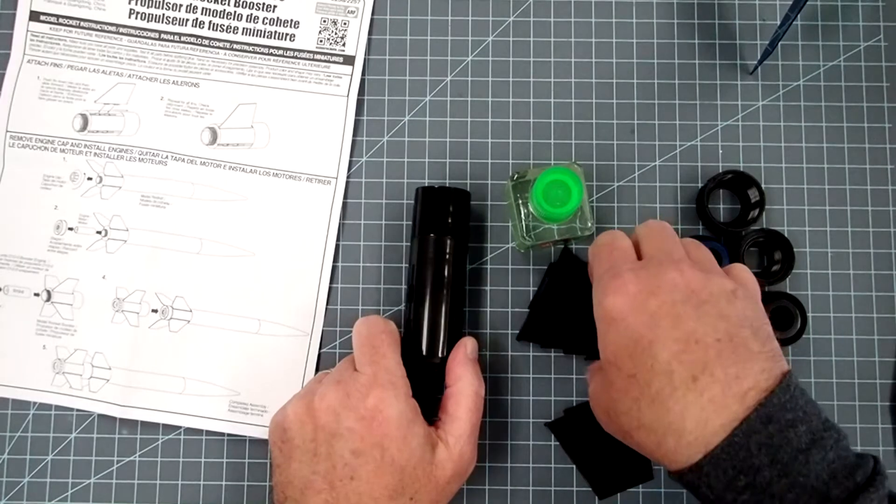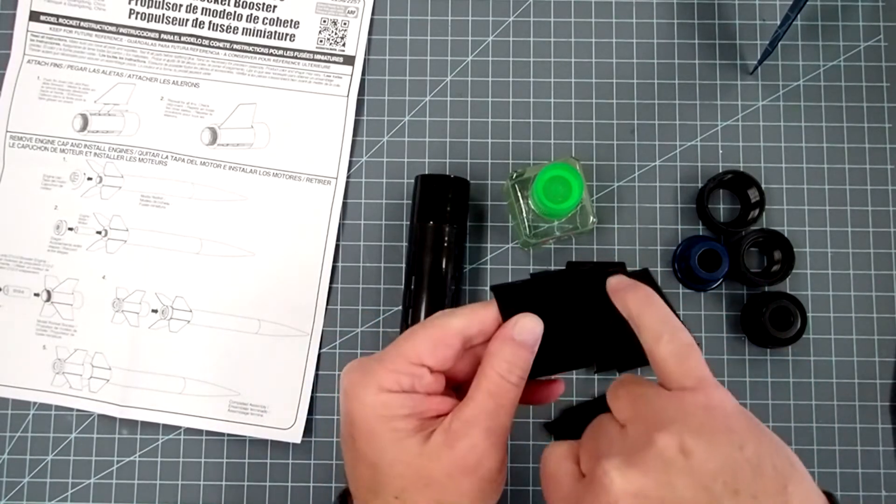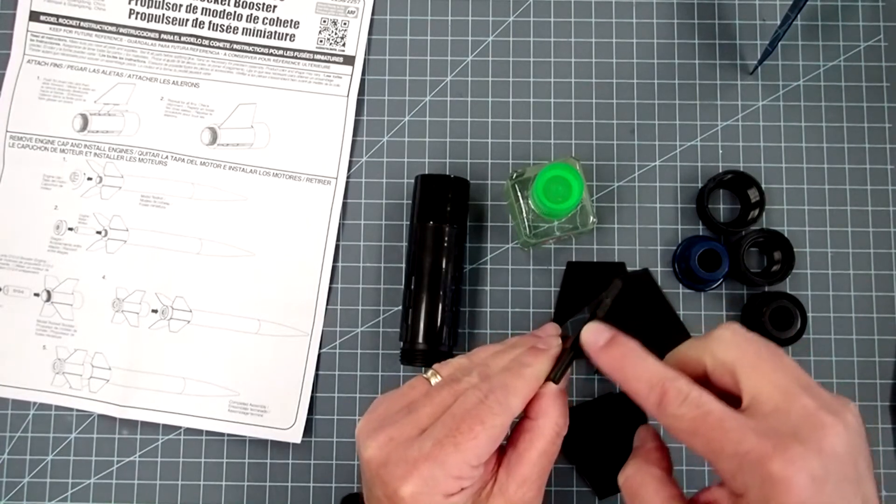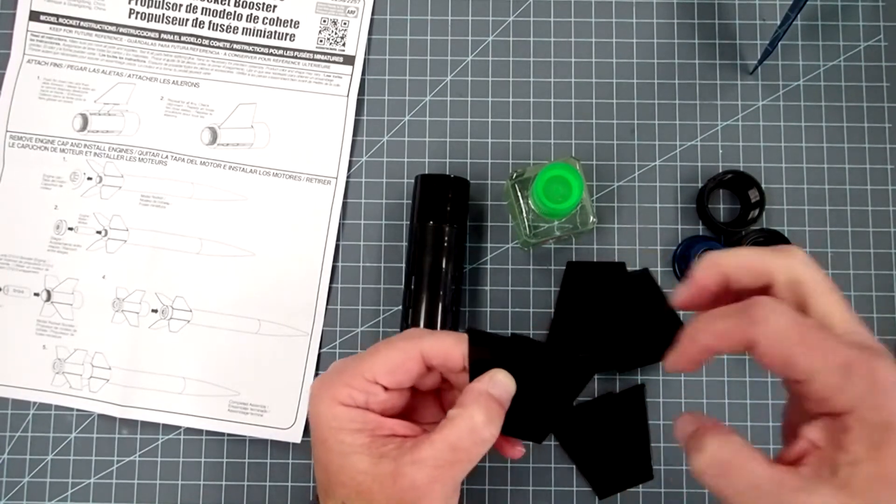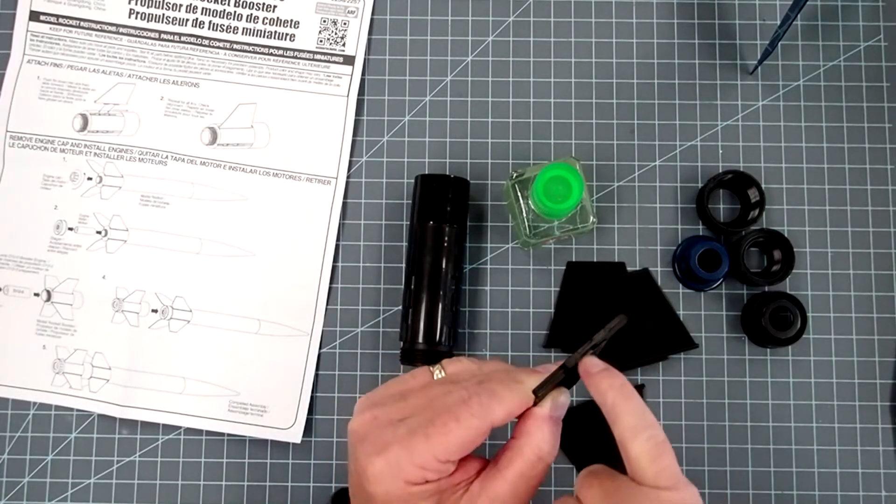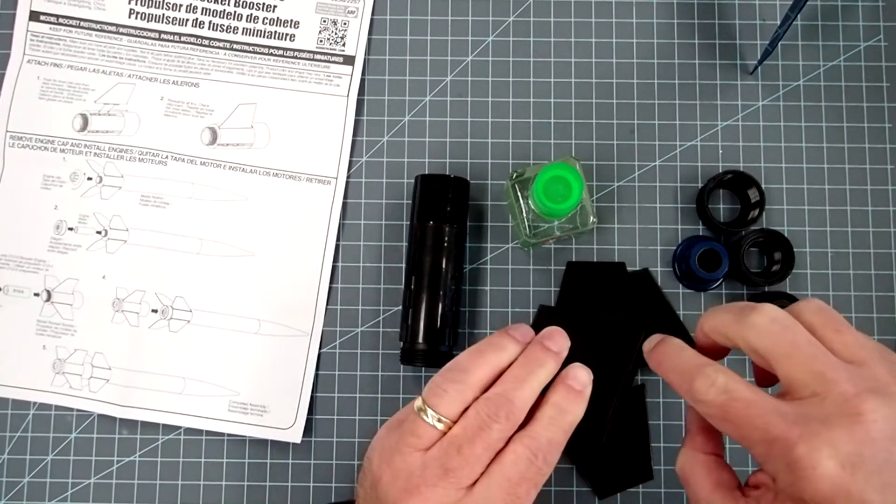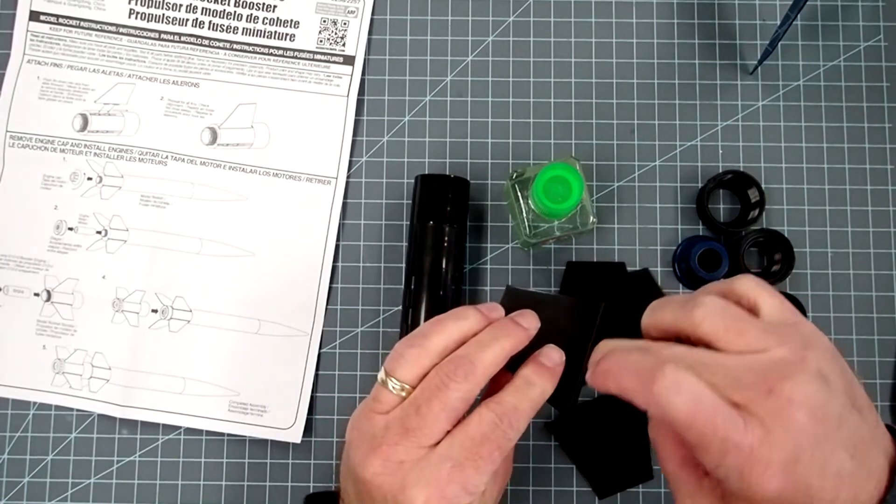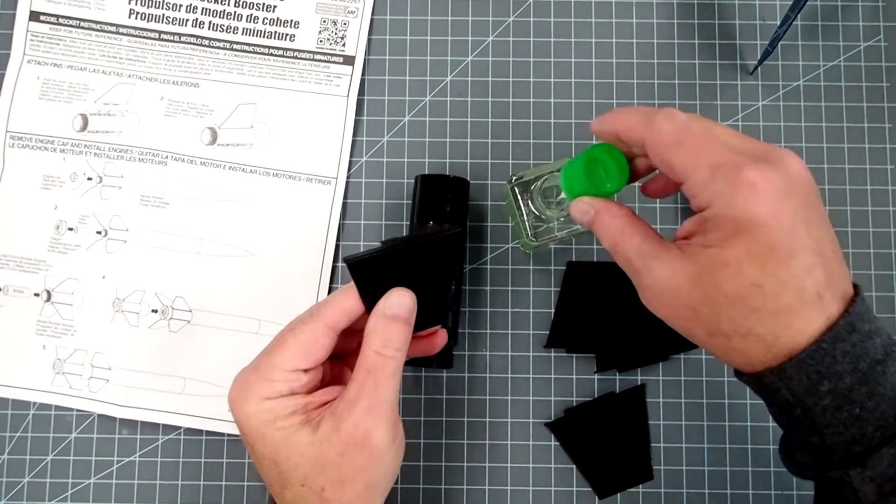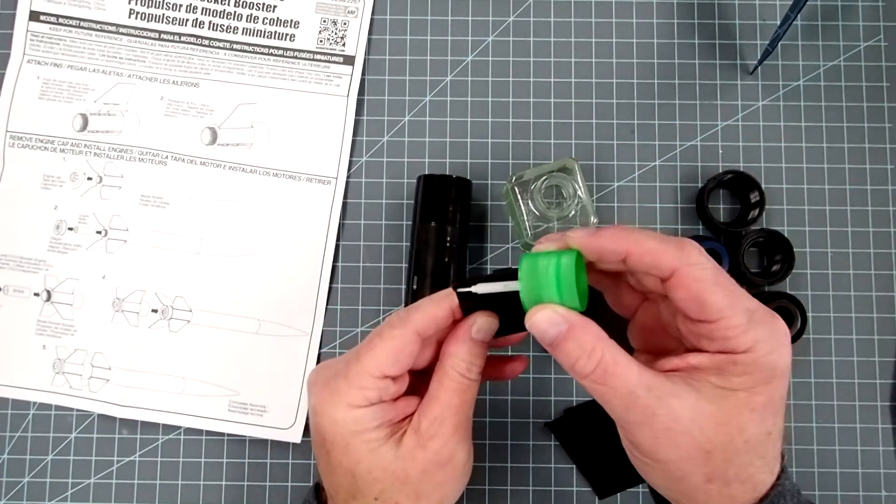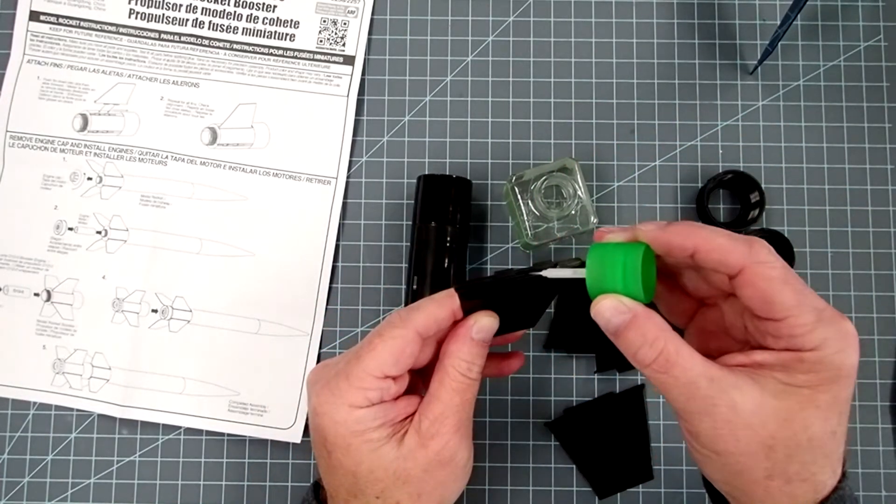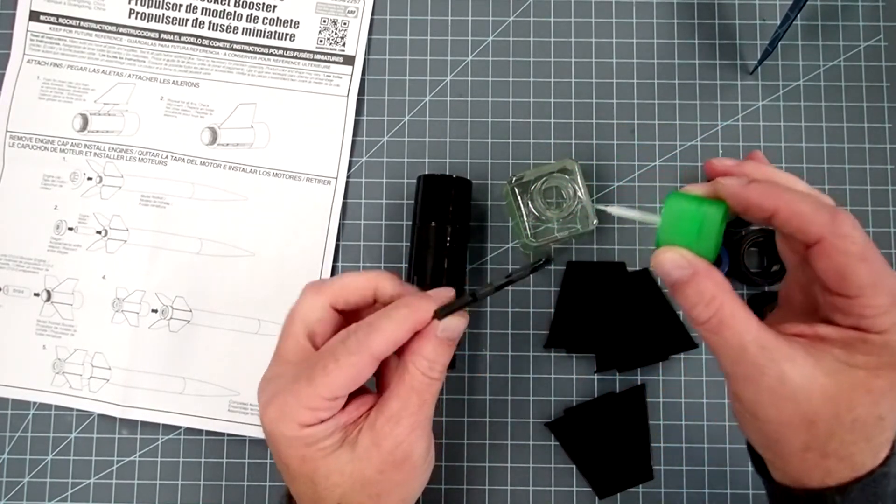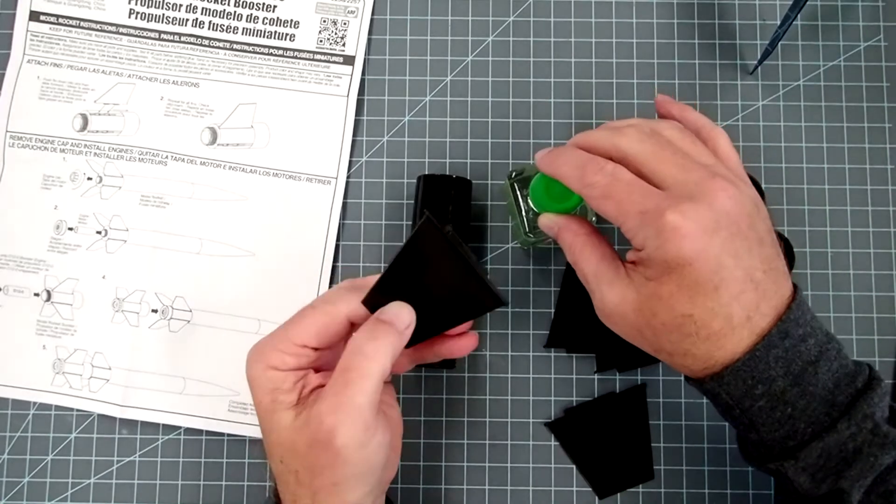And so what we want to do here is put glue along the contact edges here. We don't need any on the bottom of the fin tabs here. This doesn't actually contact anything. All the contact occurs along this inside ridge and then in between the regions here on the fin tab. So I'm just going to put a layer on here.